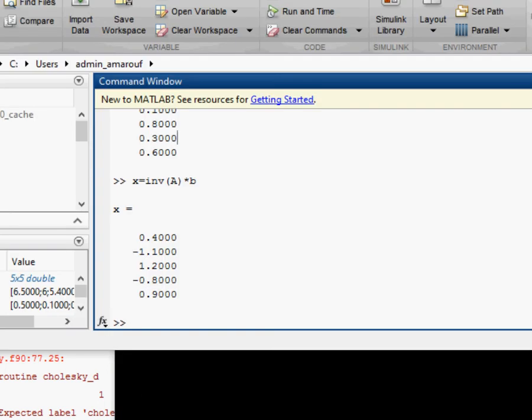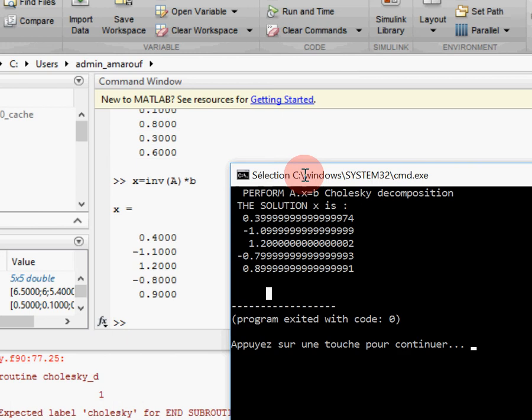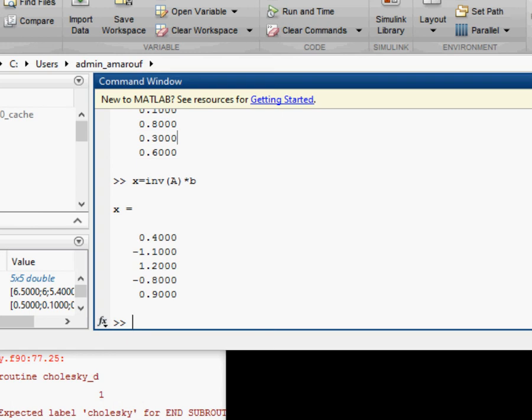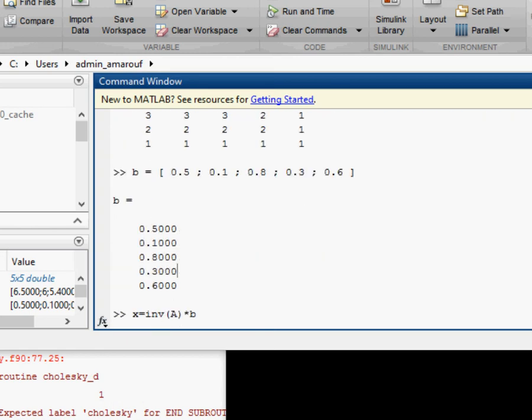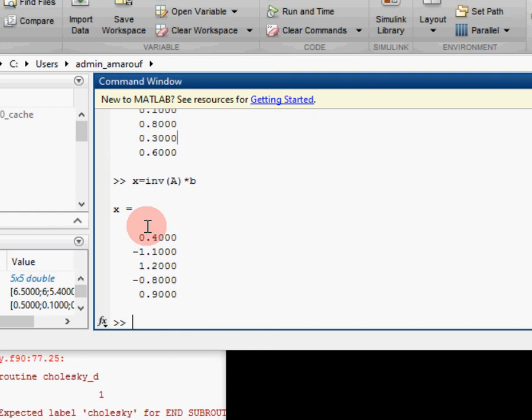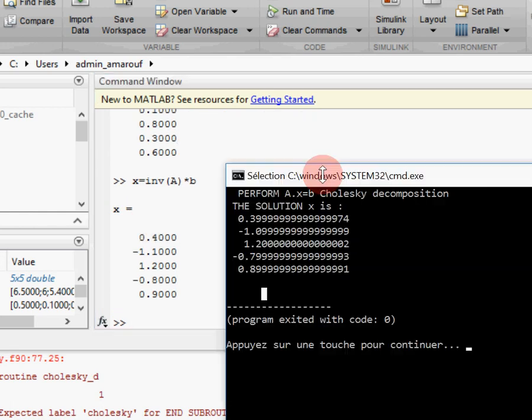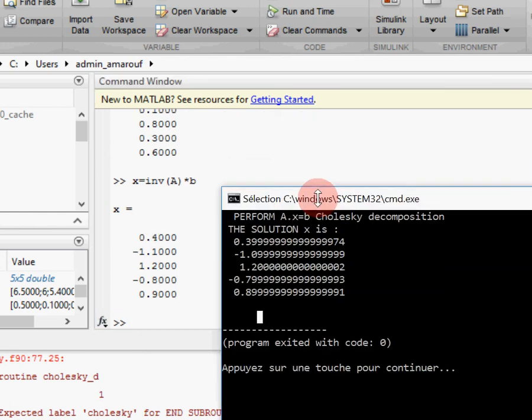Also, we can see by MATLAB what I made. Here we have the A matrix and B. We can calculate the inverse here, and you can see that we have the same vectors, the same solution.